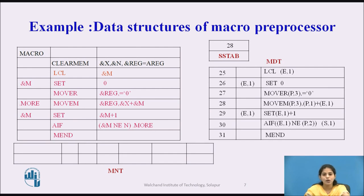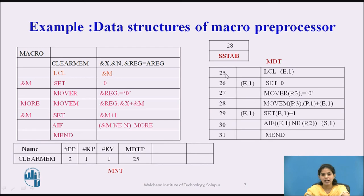Next we generate the Macro Name Table. The first field is the name: CLEAR M. The second field, #PP (positional parameters), is 2. The third field, #KP (keyword parameters), is 1. The fourth field, #EV (expansion time variables), is 1. The MDT pointer starts at position 25. The keyword parameter default table pointer value is 10. The last field, SSTP (sequencing symbol table pointer), has value 5.